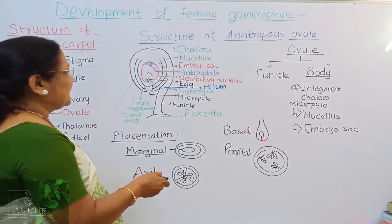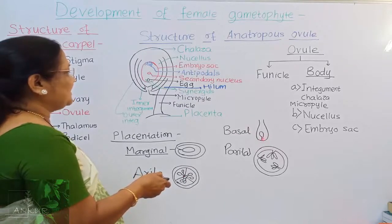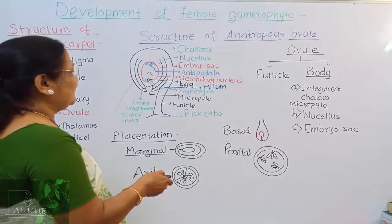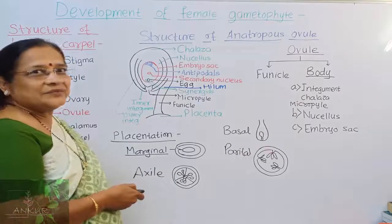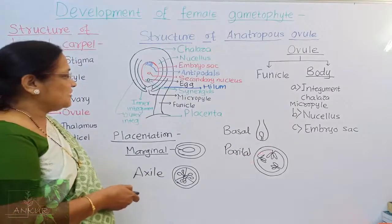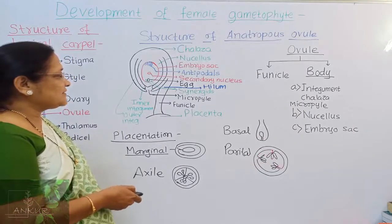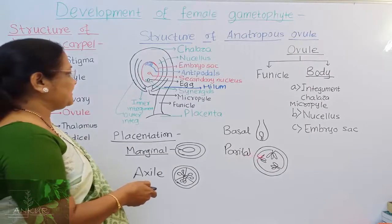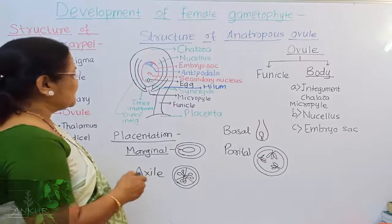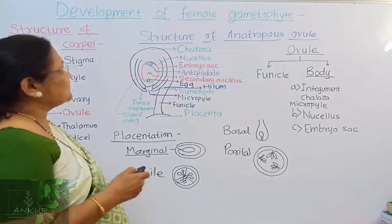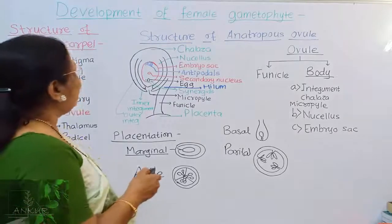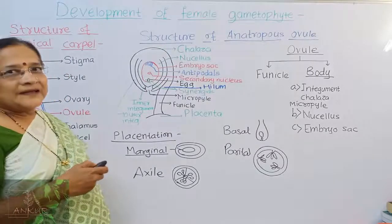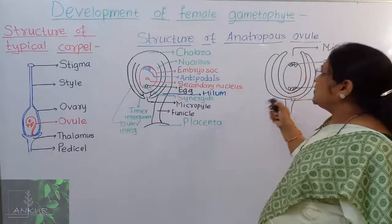In basal placentation, the placenta is at the base of the ovary, from which you get the funicle and ovule structure. In parietal placentation, the well-known example is cucurbit members such as cucumber. Here the placental position gives the funicle and the ovule structures. In angiosperms there are different types of ovules, and mostly in angiosperms you get the anatropous ovule.